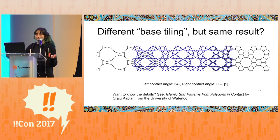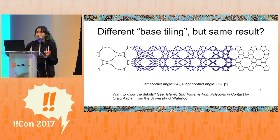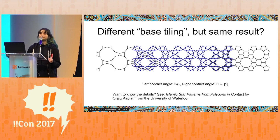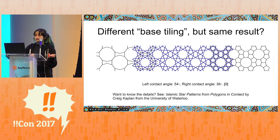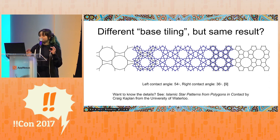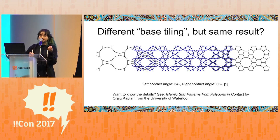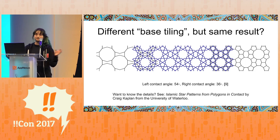One interesting thing about Hankin's algorithm is that different base tilings can lead to the same result. We see a tiling on the left and one on the right that are different, but if you apply the algorithm with a contact angle of 54 degrees on the left and 36 degrees on the right, you get the same star pattern. The reason for this is a special transformation between the two tilings — at a fundamental level, they have very similar symmetry structures. That transformation is called the rosette transformation.